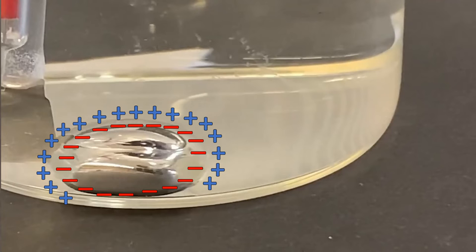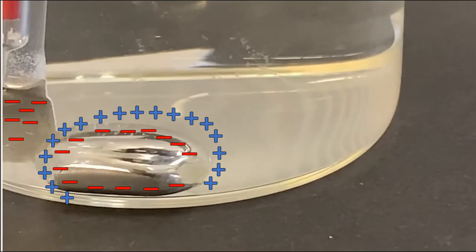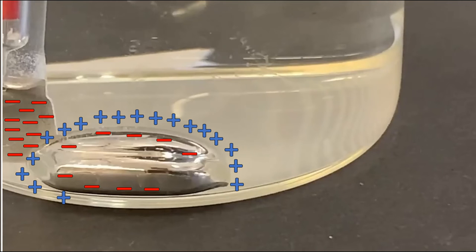When the gallinstan droplet is touched with a metal conductor, the electrons flow from the gallinstan to the metal. This changes the surface charge distribution, which changes the surface tension, which changes the shape of the drop.